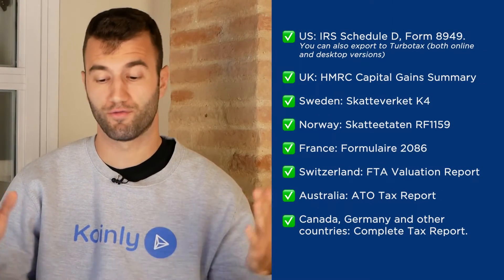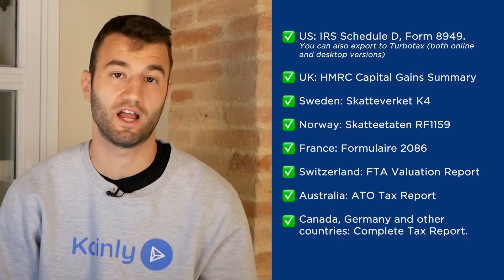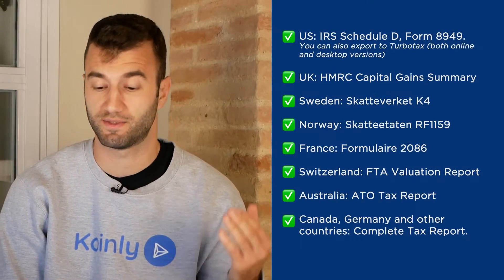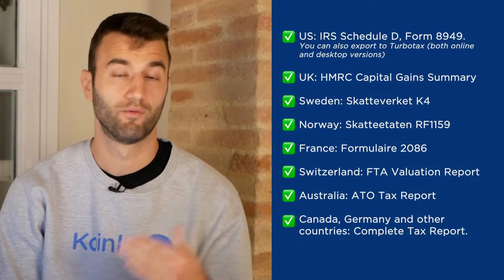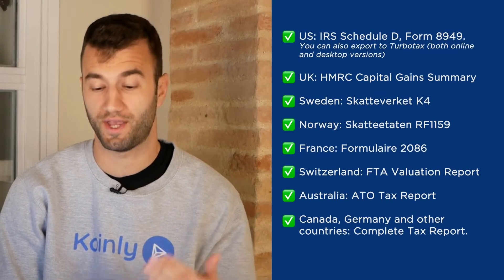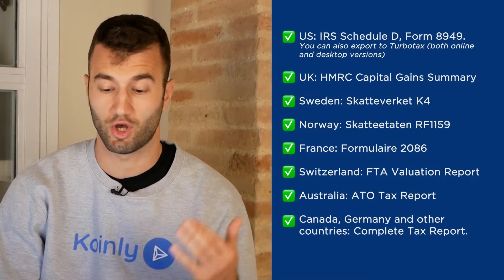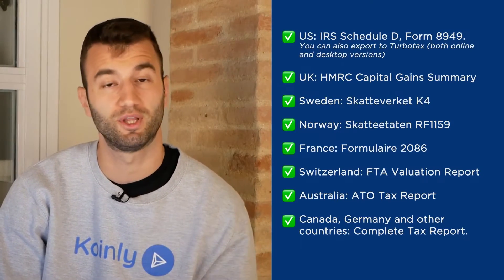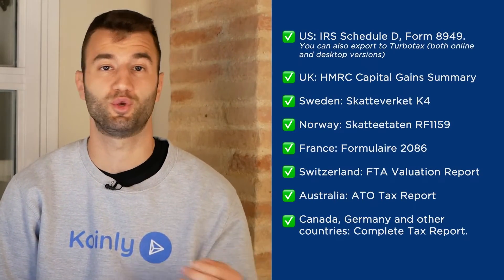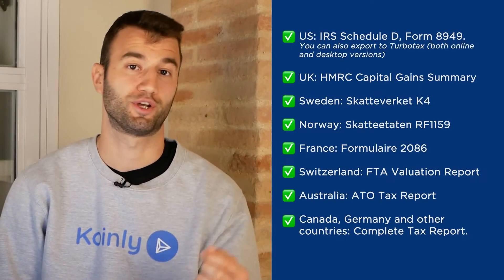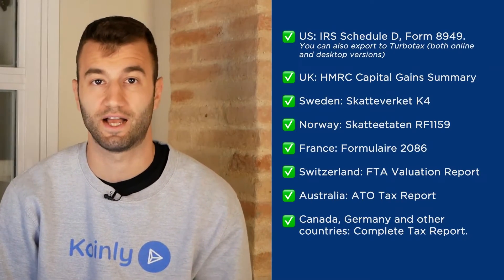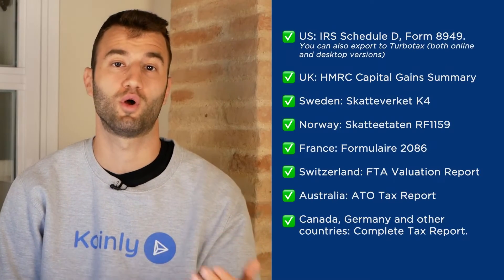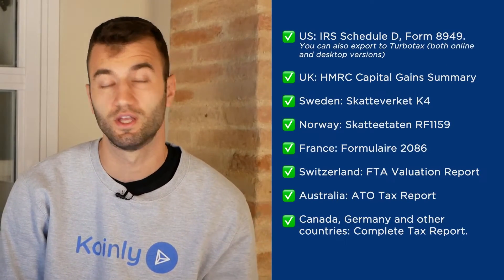We have plenty of different reports. For the US we have the IRS Schedule D Form 8949, and you can also export to TurboTax — both online and desktop versions. We have reports for UK, Sweden, Norway, France, Switzerland, Australia, Canada, Germany, and other countries. We also have the Complete Tax Report, which is a document you can print off and give directly to your accountant and they will combine it with your other tax documentation — or alternatively you can invite them to Coinly to set up their accountancy firm here with us.